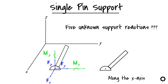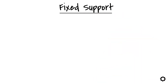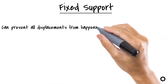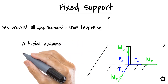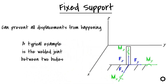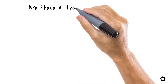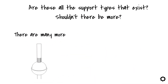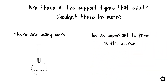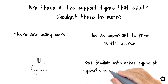A final typical support in this course is the fixed support. The fixed support is a special kind of support because it can prevent all displacements from happening, providing six unknown support reactions in total. A typical example is a welded joint between two bodies. There are many more support types, such as a ball-and-socket support which prevents all translational displacements, but these are not as important in this course and you'll likely encounter them in more advanced courses.